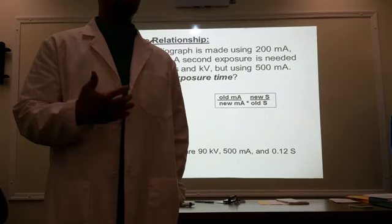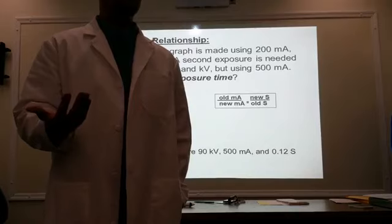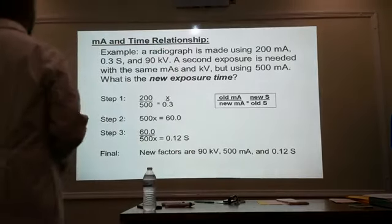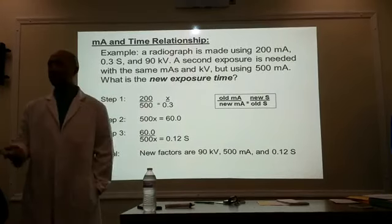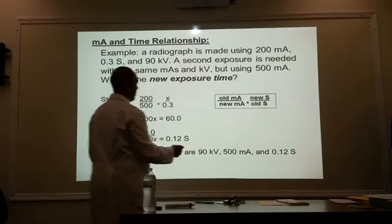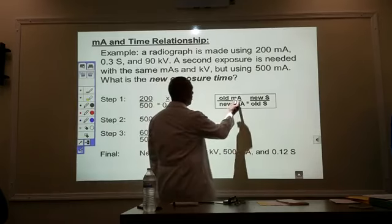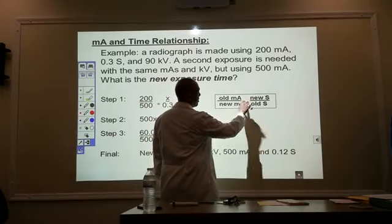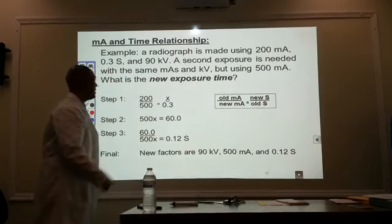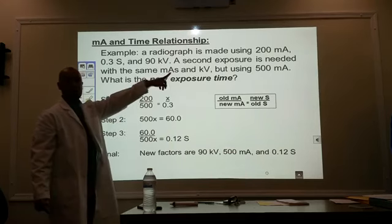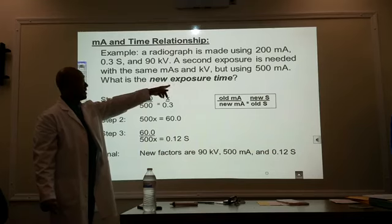Motion on my film is bad for the image and I'd have to do it again. You can't do anything with motion on your film. So I want a quicker time. If I were to plug in this formula — it's inverse: old MA over new MA equals new time over old time.